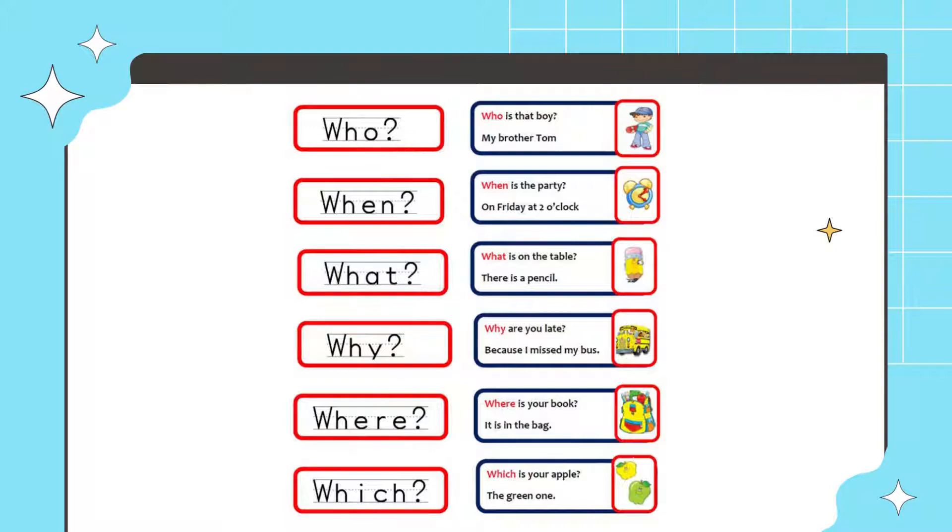So here are the example questions and their answers. The first one we can see it says, who is that boy? And the answer is my brother Tom. The second one, when is the party? And the answer is on Friday at two o'clock.